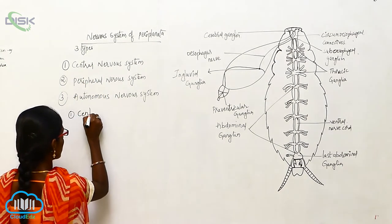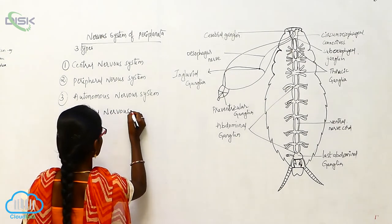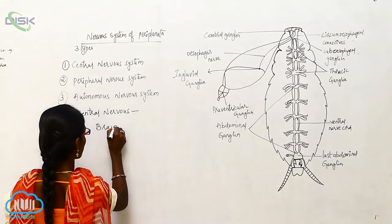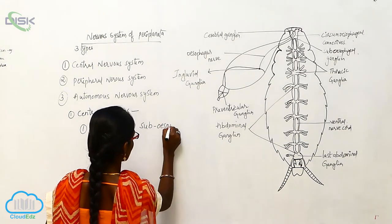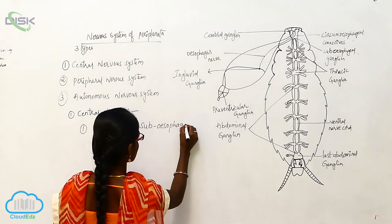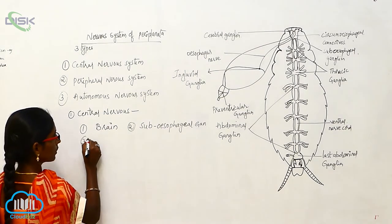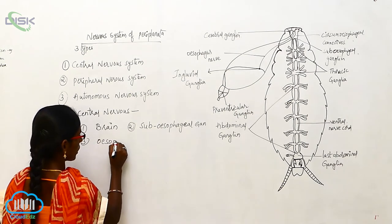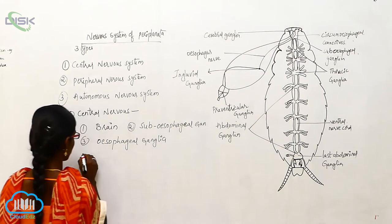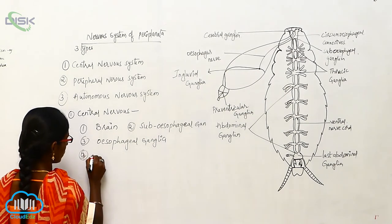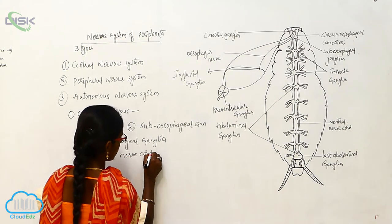The central nervous system includes the brain, subesophagal ganglia, esophagal ganglia, and the ventral nerve cord.